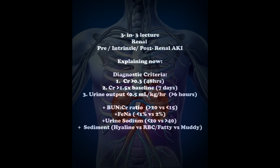On initial evaluation, the BUN-to-creatinine ratio helps differentiate: over 20 in pre-renal, less than 15 in intrinsic, and variable in post-renal. The fractional excretion of sodium (FENa) — the percentage of filtered sodium excreted relative to filtered creatinine — is less than 1% in pre-renal, greater than 2% in intrinsic, and variable in post-renal. Urine sodium concentration is less than 20 mEq/L in pre-renal azotemia and over 40 mEq/L in intrinsic injury.